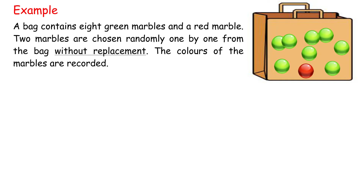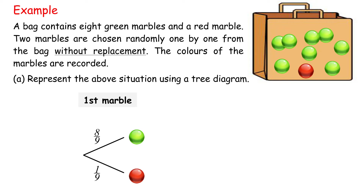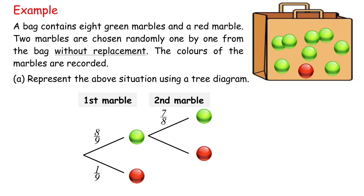Example: A bag contains eight green marbles and one red marble. Two marbles are chosen randomly one by one from the bag without replacement. The colors of the marbles are recorded. A. Represent the above situation using a tree diagram. Probability of first marble: getting a green marble is 8 over 9, while getting a red marble is 1 over 9. For second marble when first is green: getting a green marble is 7 over 8, getting a red marble is 1 over 8. For second marble when first is red: getting a green marble is 8 over 8.